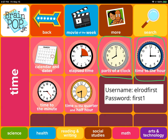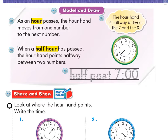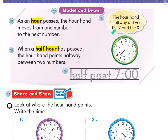Now on page 550, it says: as an hour passes, the hour hand moves from one number to the next number. When a half hour has passed, the hour hand points halfway between two numbers. This little bubble up here says the hour hand is halfway between the seven and the eight, so we see the hour hand is pointing between the seven and the eight.